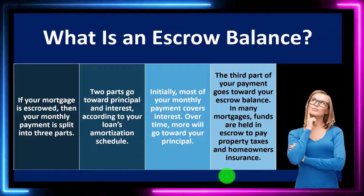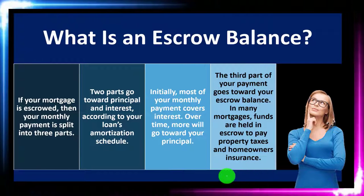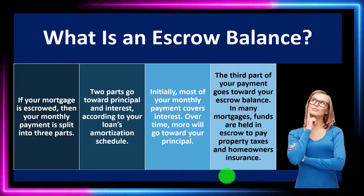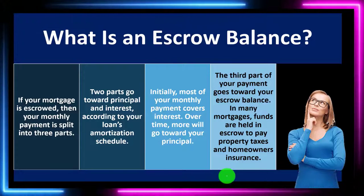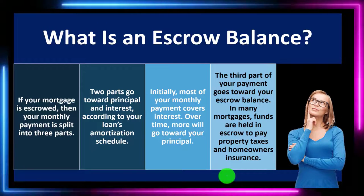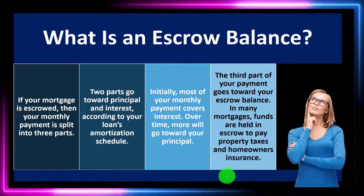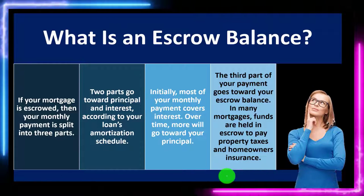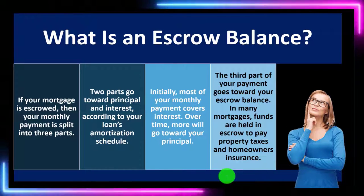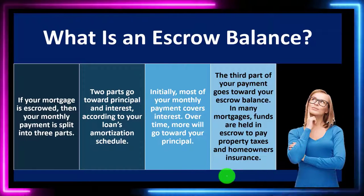The third part of your payment goes towards your escrow balance. Many mortgages hold funds in escrow to pay property taxes and homeowners insurance, breaking those home costs down into a monthly component even though they're not paid monthly. This avoids a larger lump sum payment mid-year or end of year, and gives the lender some assurance that you're able to pay these costs, while making things more uniform monthly for budgeting purposes.